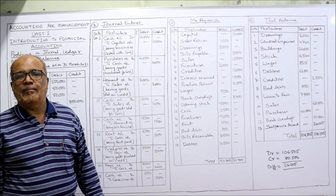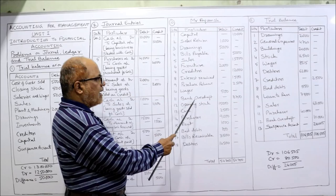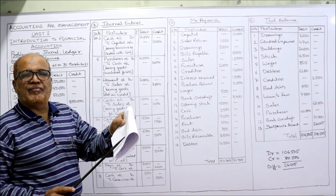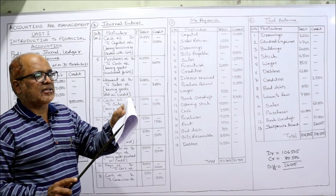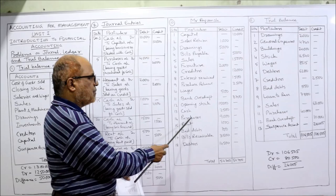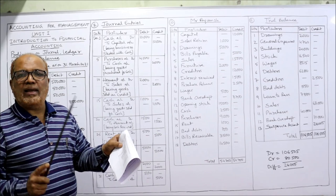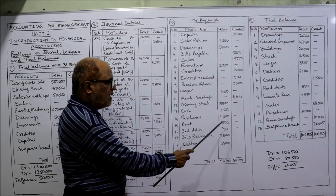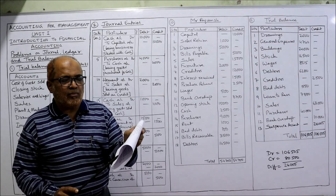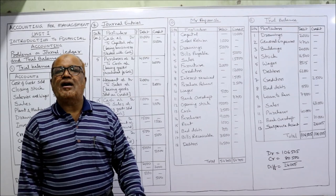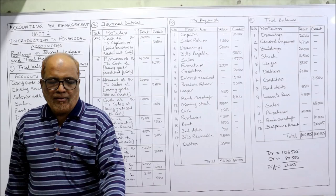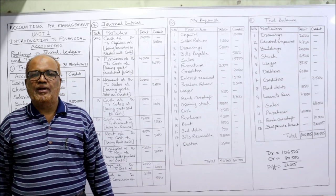Bank overdraft — note: if only 'bank' is given we treat it as an asset, but bank overdraft is a liability, so credit balance — 8,700. Opening stock is an asset — 15,000 debit. Cash is an asset — 2,500. Purchases — debit side 9,000. Rent is an expense — debit side 1,000. Bad debts is a loss — debit side 700. Bills receivable is an asset — debit side 3,500.